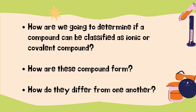But how are we going to determine if a compound can be classified as ionic or covalent? How are these compounds formed, and how do they differ from one another? These are the things we need to discuss in today's video lesson, but our topic will focus on the properties of ionic and covalent compounds. So without further ado, let's get started.